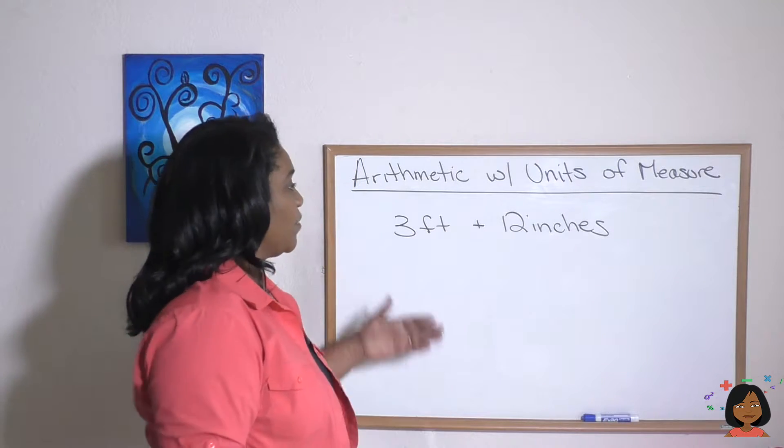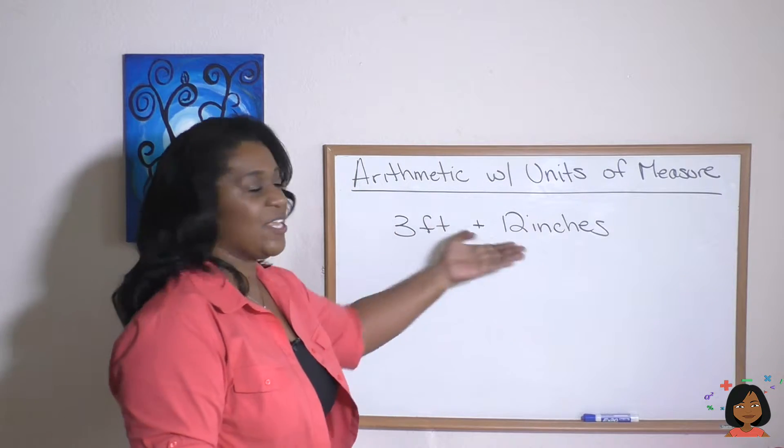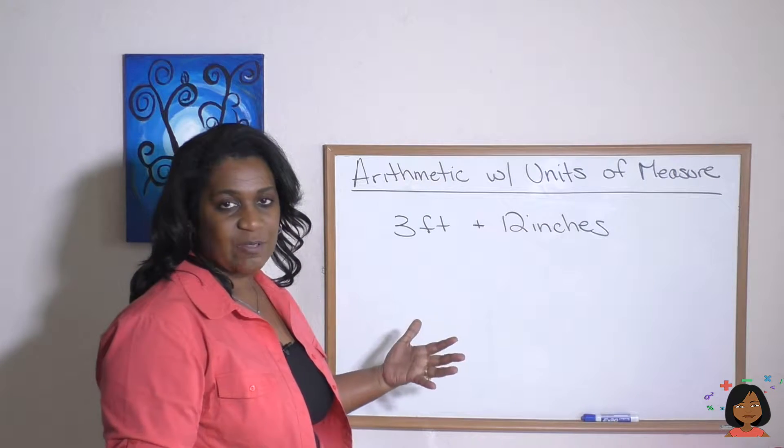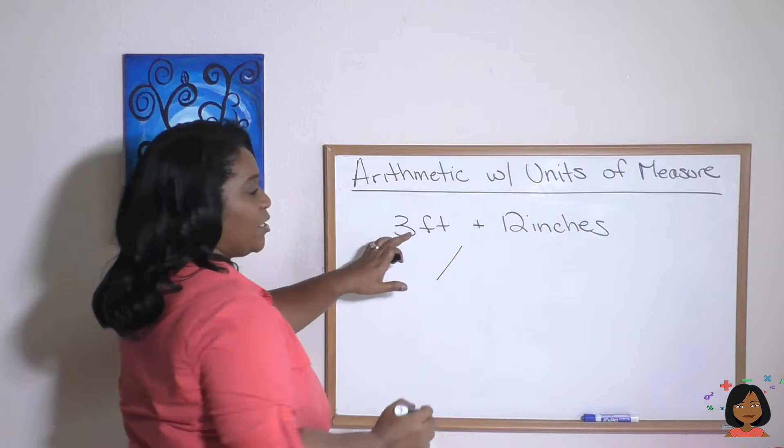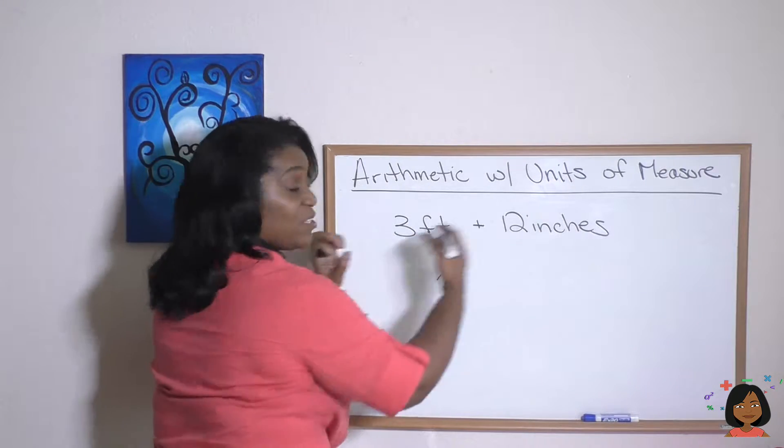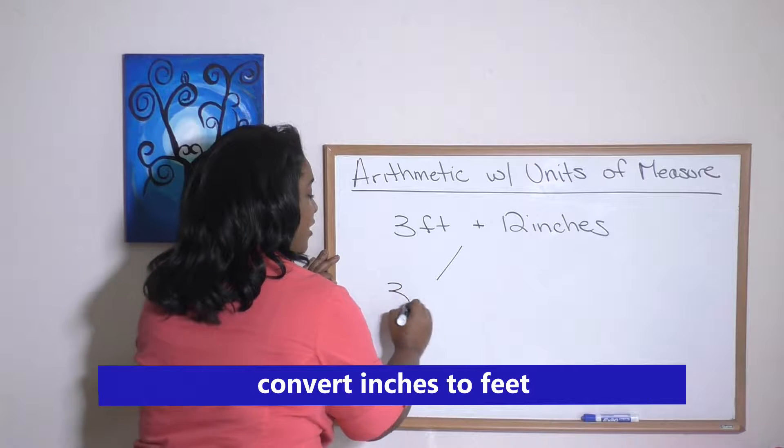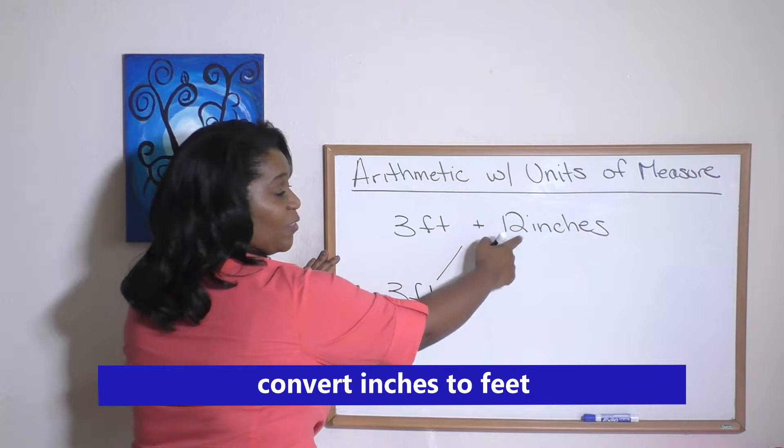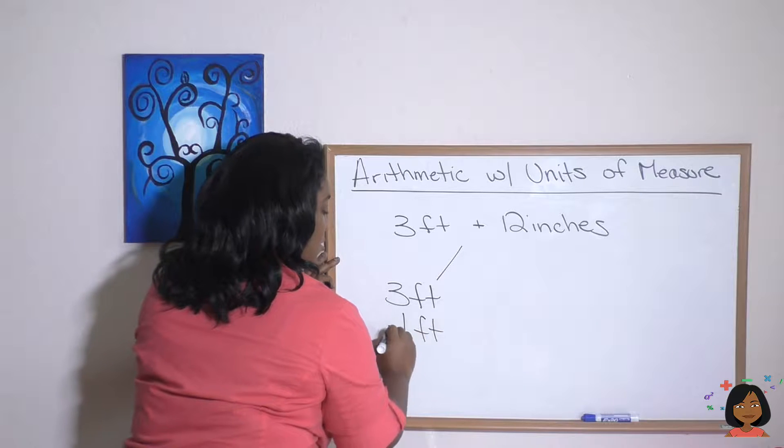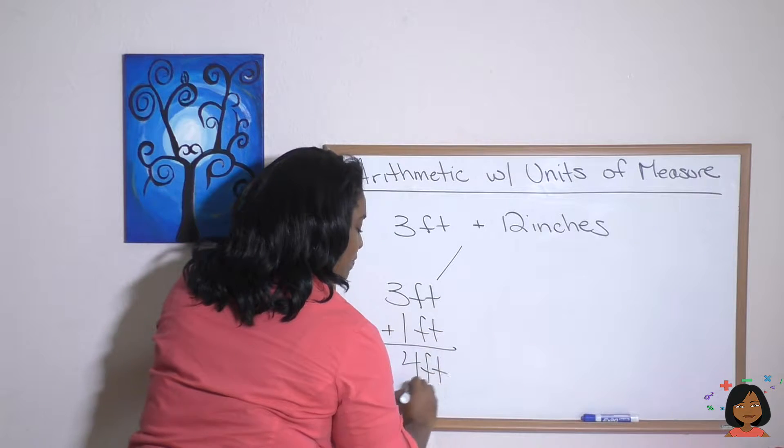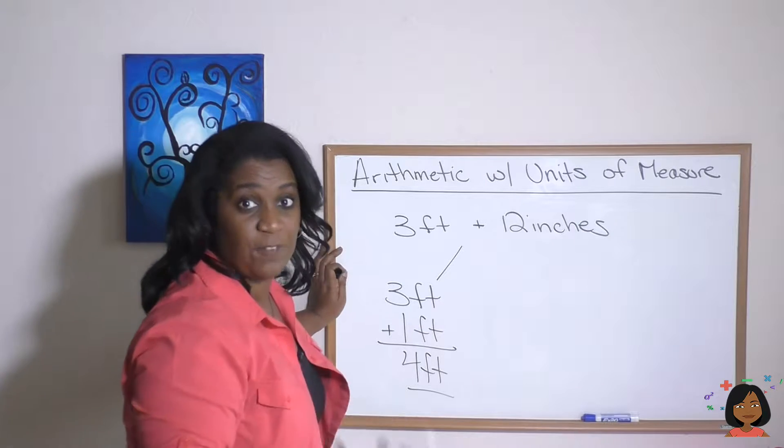Take a look at our first example. We want to add three feet and 12 inches. How do we do that? Well, there's really two ways we can do it. The first way is we can move our inches over to feet. So we have three feet and we know that 12 inches happens to be one foot. So we add those together and we get four feet and we express our answer in terms of feet.